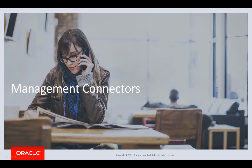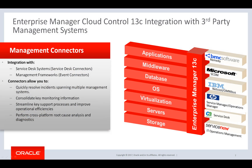Let's start with an overview of management connectors. Enterprise Manager Cloud Control provides management connectors to integrate with the most popular third-party management systems. There are two types of connectors. One is a service desk connector for ticketing system vendors, which allows EM to automatically create service desk tickets in response to Enterprise Manager incidents. Another type is an event connector for event management vendors, which allows EM to forward events to third-party management systems. There are seven connectors available in EM13C. For HP, we have connectors available for both Service Manager and Operations Manager.